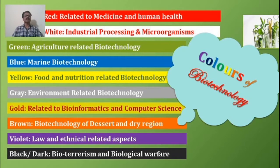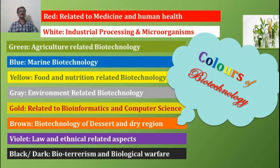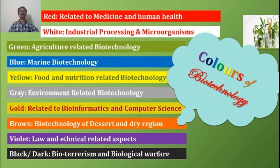Biotechnology has applications in various sectors, and depending on that specific sector it has been called red biotechnology, white biotechnology, green biotechnology, blue biotechnology, etc. Red biotechnology is related to medicine and human health. White biotechnology is related to industrial processing and microorganisms. Green biotechnology is related to the agricultural sector. Blue biotechnology is related to the marine sector. Yellow biotechnology is related to food and nutrition. Gray biotechnology is related to environmental issues. Golden biotechnology is related to bioinformatics and computer science. Brown biotechnology is related to scientific advancement in arid and dry regions. Violet biotechnology is related to law and ethical issues. Black or dark biotechnology is related to bioterrorism and biological warfare.